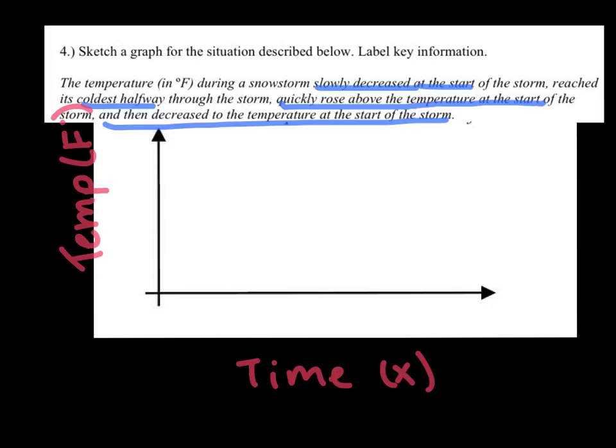So the start of our storm, it says it slowly decreases to the coldest halfway through. So I'm going to mark on my time axis here about halfway through the storm. If I just pick a random spot to start, it really doesn't matter. We have no specific values. I'm going to say it started here. So it's going to be gradual or somewhat, not very steep slope. But quickly and slowly, that's what's describing your slope. So slowly decreased at the start and reached its coldest halfway.